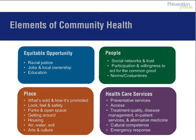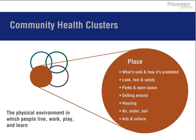Now we'll take a look at each cluster and the factors within them. The place cluster is commonly referred to as the built and natural environment. Factors within the place cluster include reliable, safe, affordable transportation and housing; what's sold and how it's promoted, such as accessible and affordable nutritious food; safe parks and open space; and clean air, water, and soil. Factors in the place cluster can also reflect history and culture — for example, displayed public art can reflect pride in the culture and heritage of the community. These factors provide one reflection of investment in a community, or a lack of it.